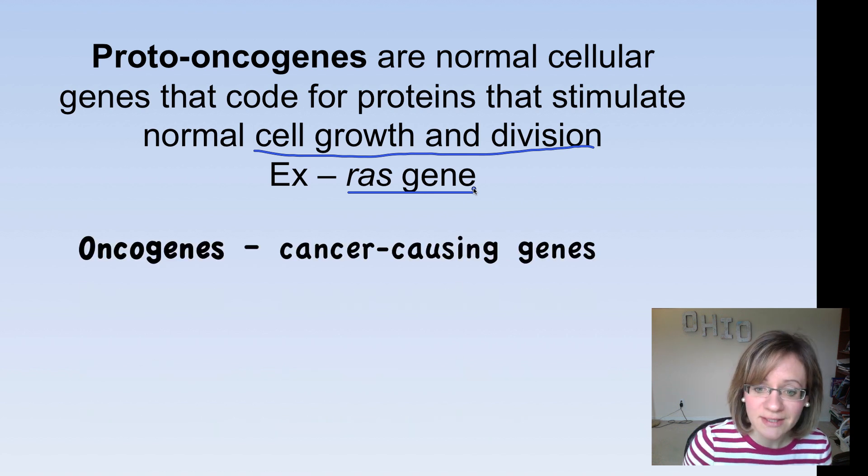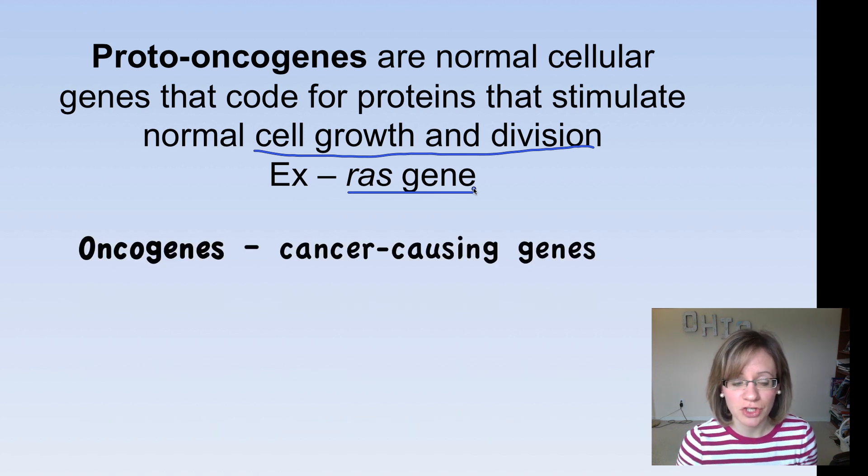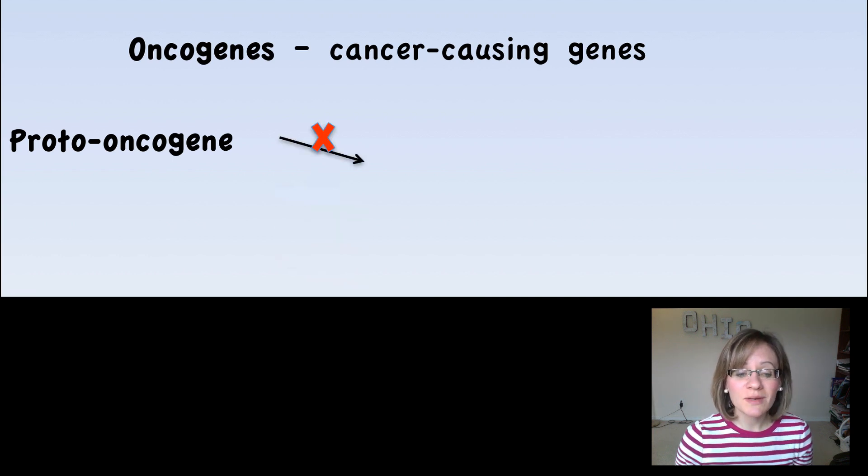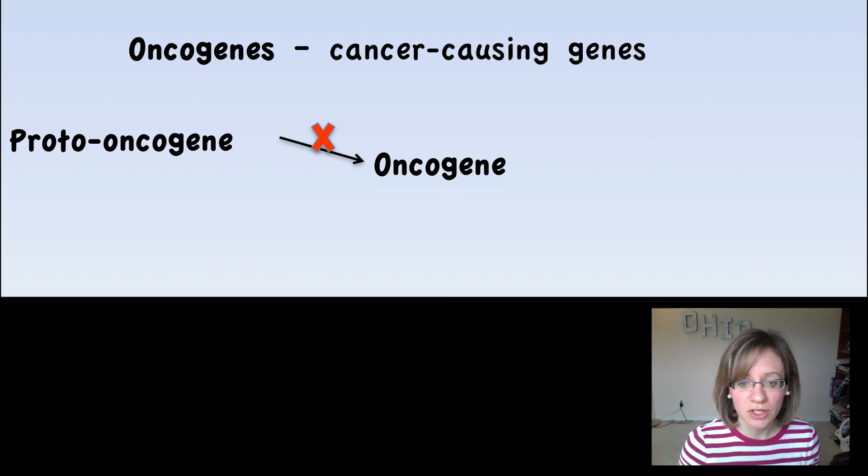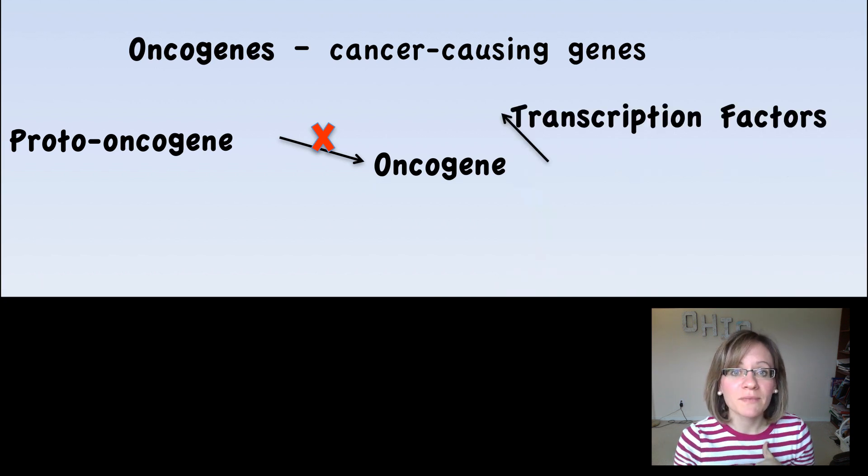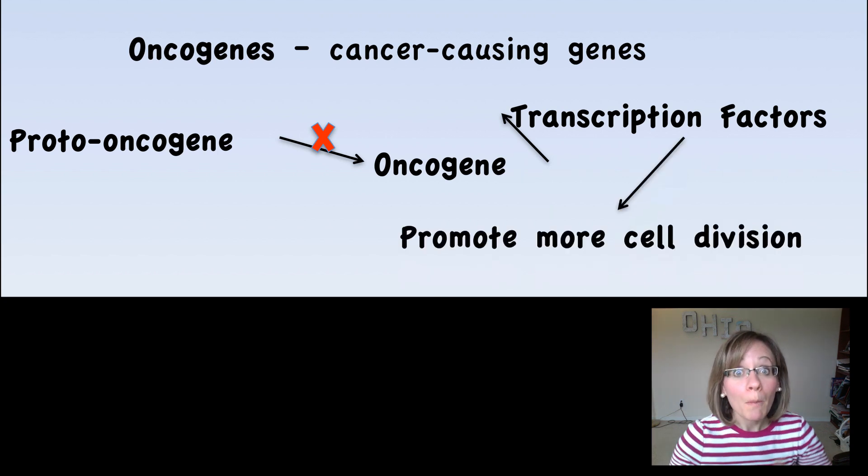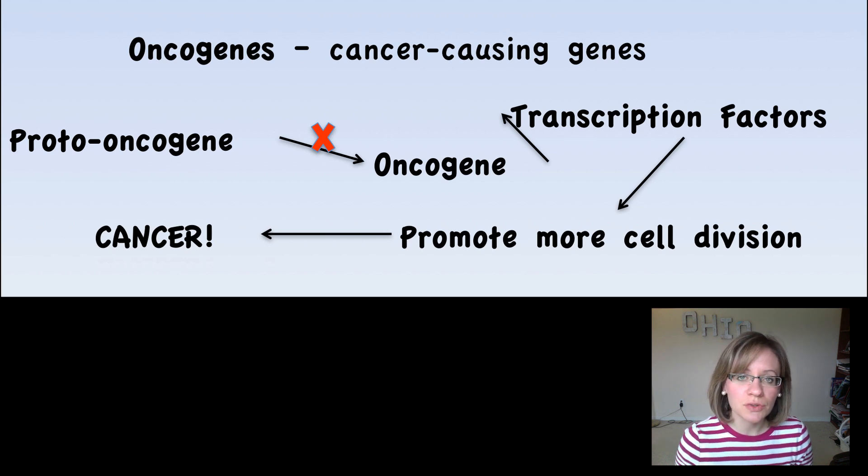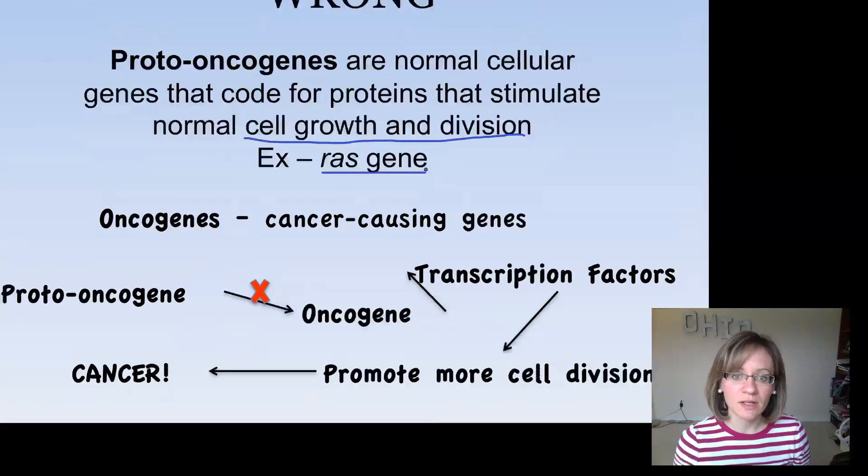Now, an oncogene is not good. This is a cancer-causing gene. So what can happen is we can have a normal proto-oncogene. We can have something go wrong, a mutation happen, that can turn it into an oncogene. And so now this oncogene is going to stimulate lots and lots of transcription factors, which is going to promote more cell division like we saw in the previous slide, which then leads to cancer. Because, remember, cancer is simply uncontrolled cell division. So if at any point this gene regulation goes awry, we could have cancer develop in our cells.